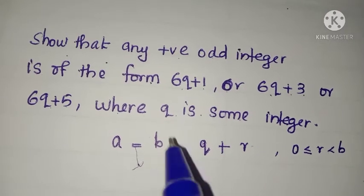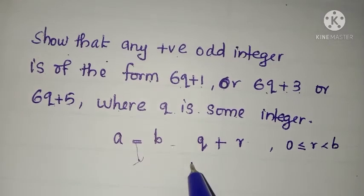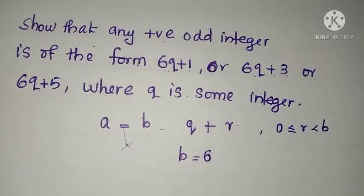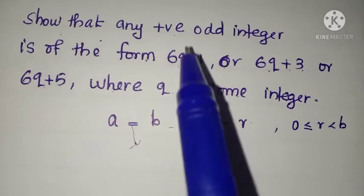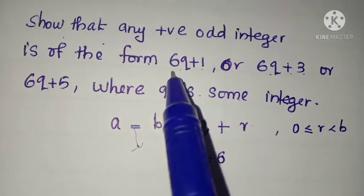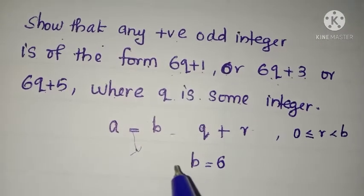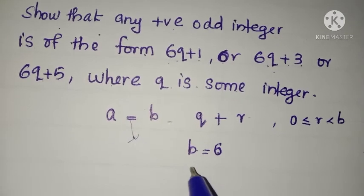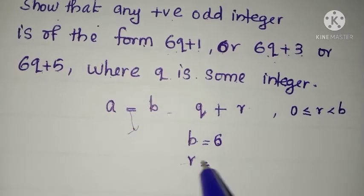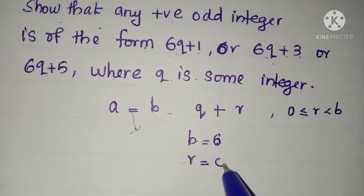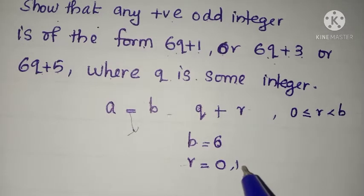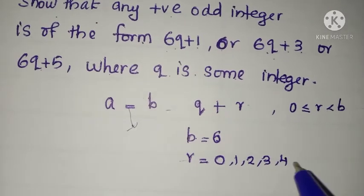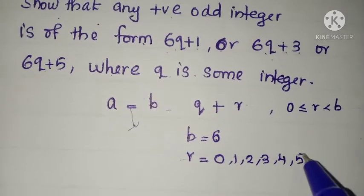Let us consider here the divisor B as 6. When a number is divided by 6, the possible remainders are 0, 1, 2, 3, 4, 5.